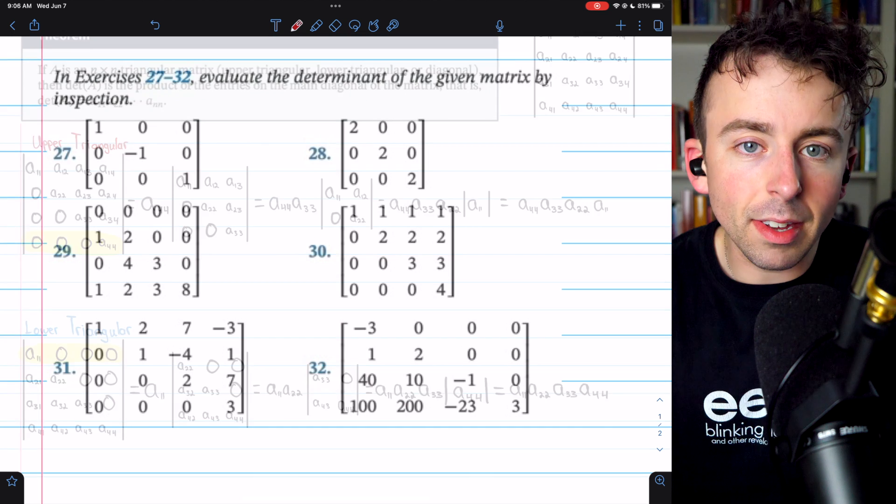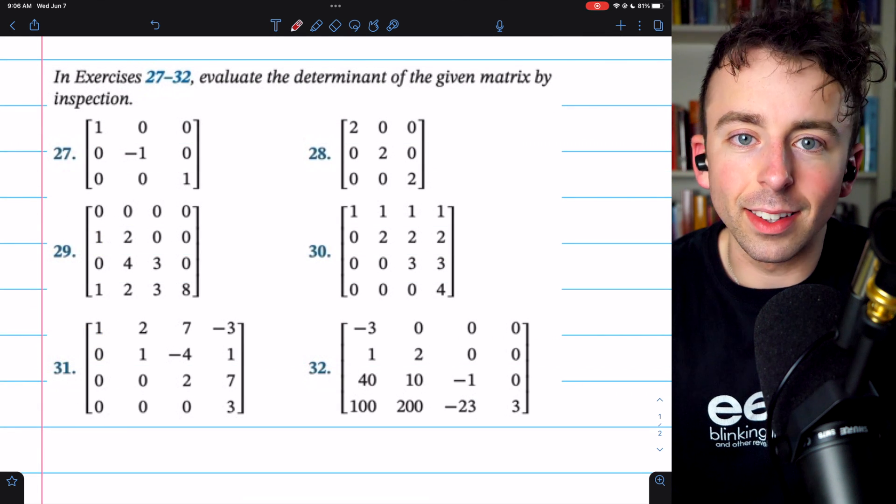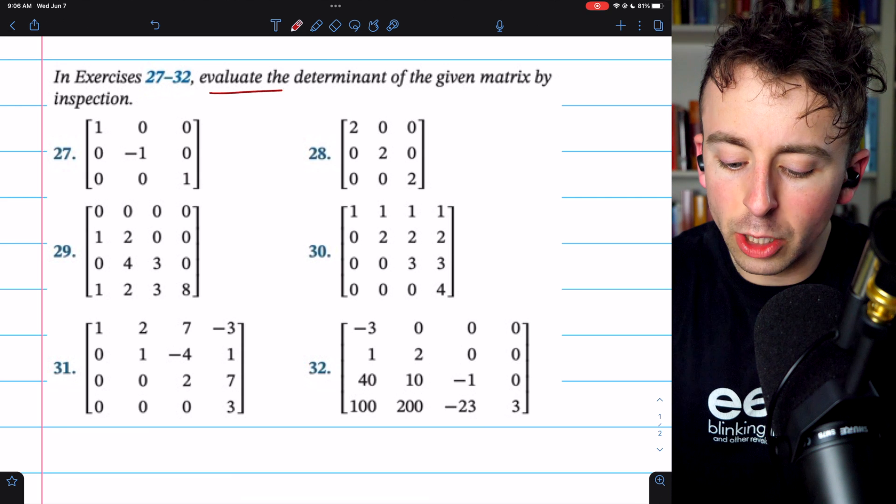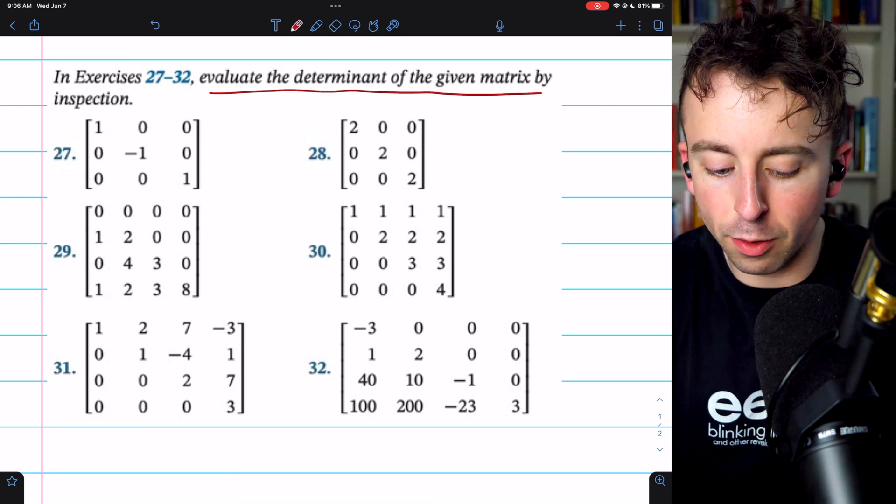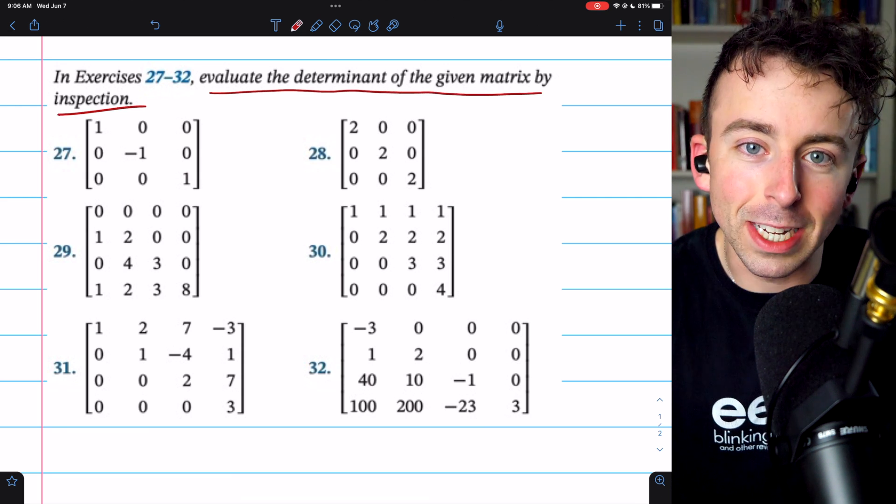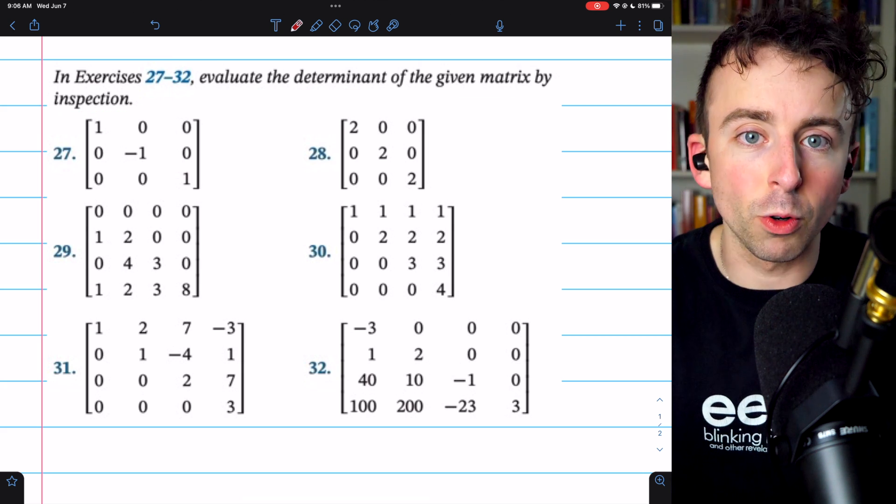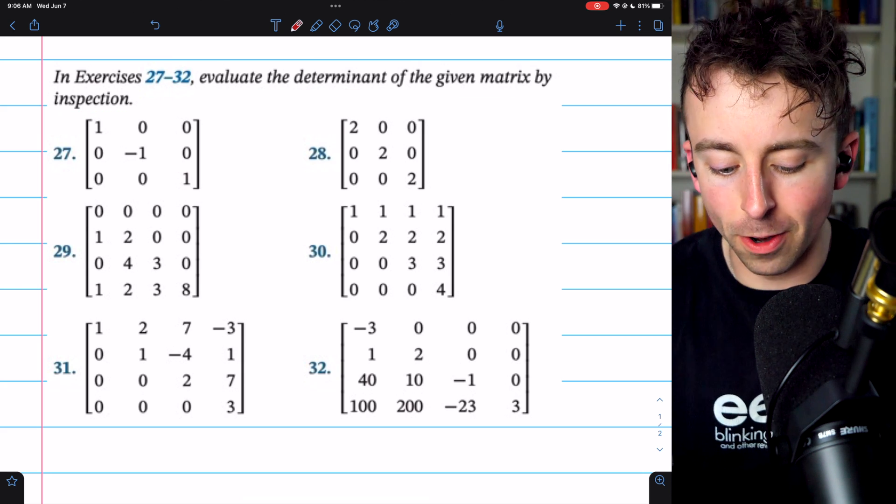Let's do some examples. These exercises are from Howard Anton's Linear Algebra Text. Link in the description if you're interested in that. We're just asked to evaluate the determinant of the given matrix by inspection, which means it's really easy. You can pretty much just look and calculate it in your head because these are triangular matrices. So we can apply the theorem that we just learned.